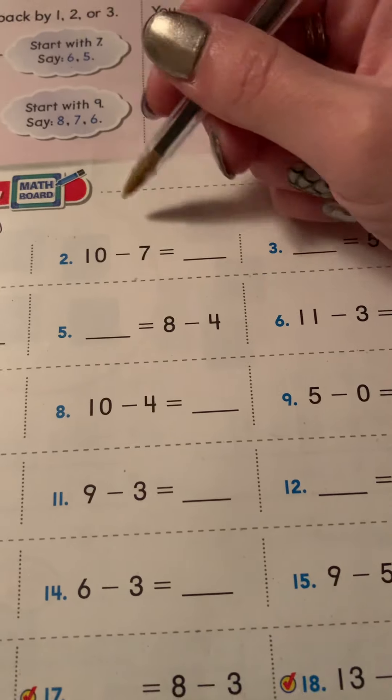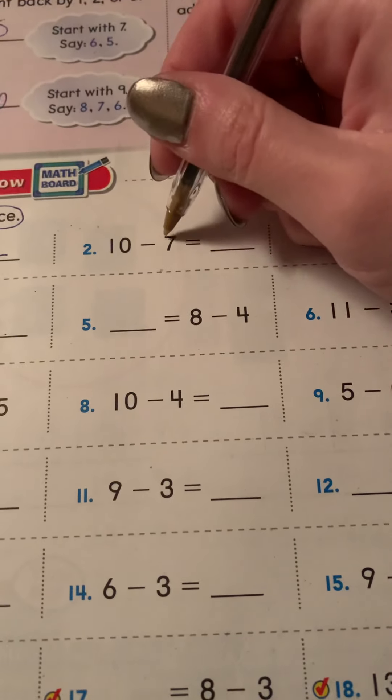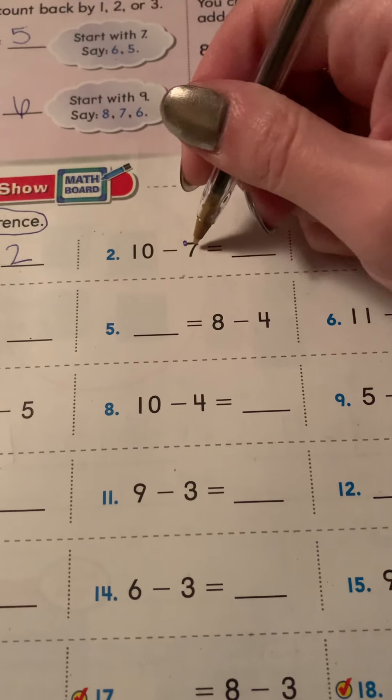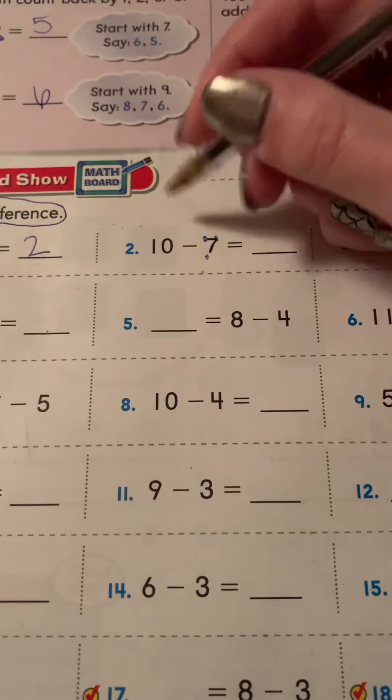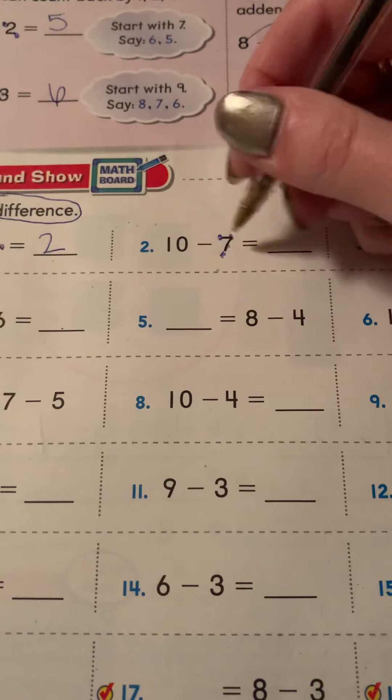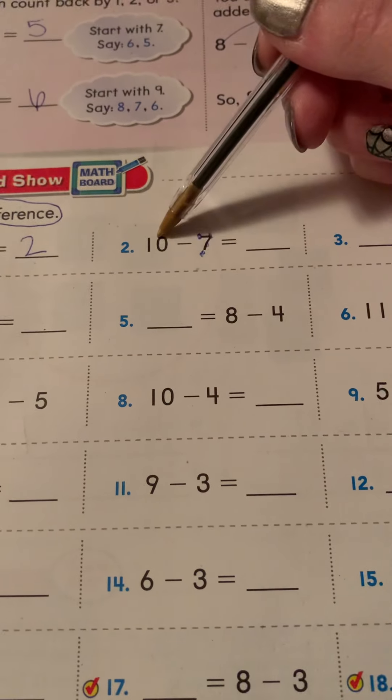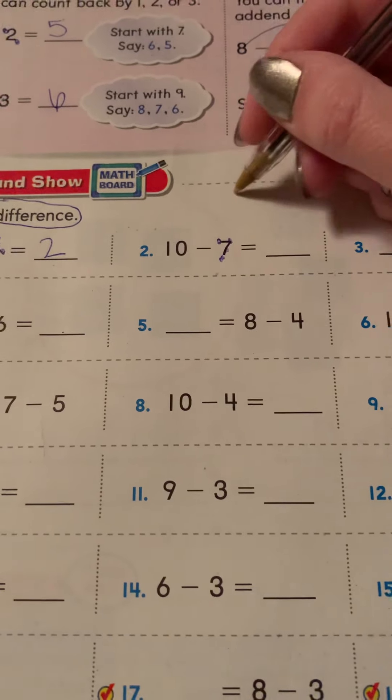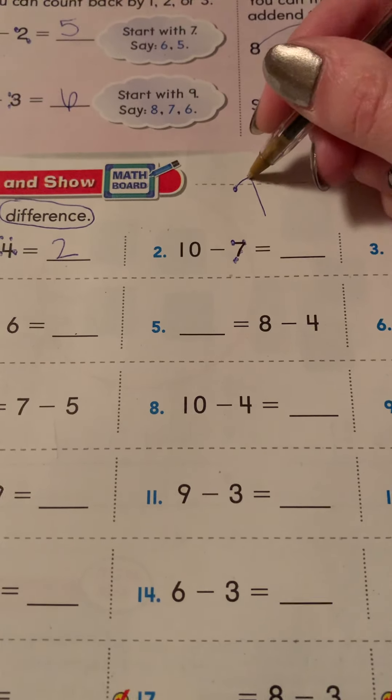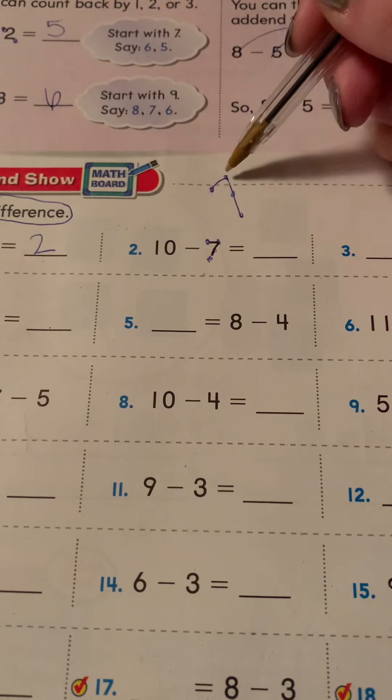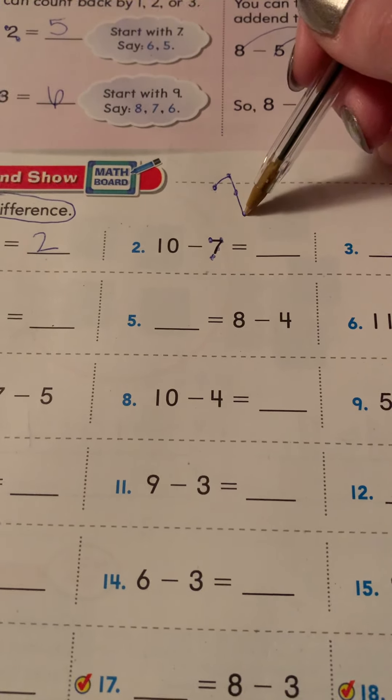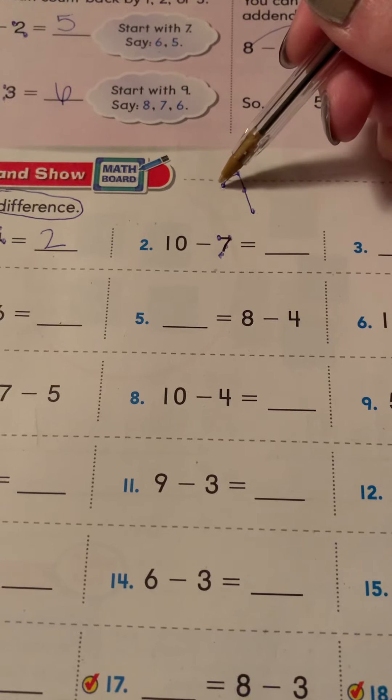10 minus seven. I always put the touch points on the second number in subtracting. And you don't ever have to put them on both because you're going to start with this number. You only need your touch points on the second number. So you're going to put 10 in your head and you're going to count backwards. This is what a seven looks like in touch points. You count it like this: one tap, one, two, one, two, one, two, double, double, double, double.